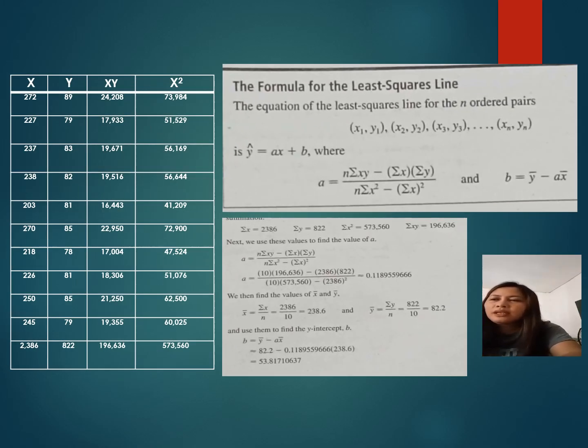We are going to calculate the equation. Bring down x and y from Table 4.1. Now, in the next column, we need to multiply x and y together. 272 times 89 equals 24,208. Then, let's calculate x squared. 272 squared equals 73,984.